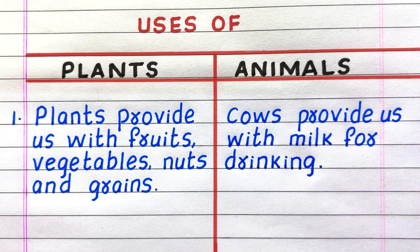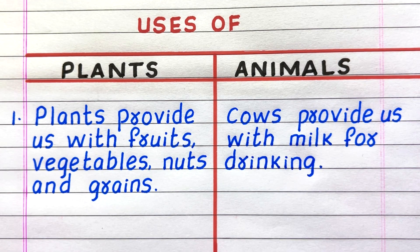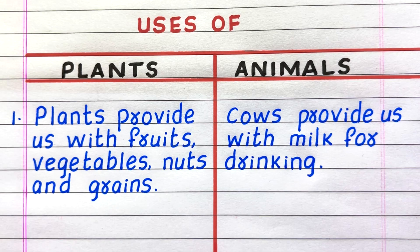First use of plants: plants provide us with fruits, vegetables, nuts and grains. First use of animals: animals such as cows provide us with milk for drinking.